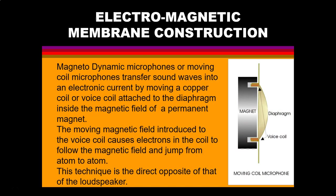Magnetodynamic microphones, also known as dynamic or moving coil microphones, transfer sound waves into electric current by moving a copper voice coil attached to a diaphragm inside the magnetic field of a permanent magnet. The moving magnetic field introduced by the voice coil causes the electrons in the coil to follow the magnetic field and jump from atom to atom. This technique is the exact opposite of the way a loudspeaker operates.